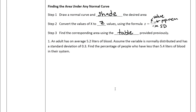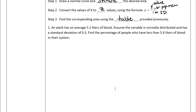Problem 1: An adult has on average 5.2 liters of blood. Assume the variable is normally distributed with a standard deviation of 0.3. Find the percentage of people who have less than 5.4 liters of blood in their system. Here they want a percent or probability, and they want less than 5.4 liters.